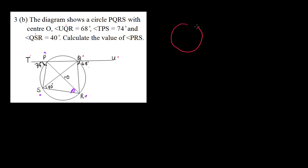Then you approach it like that. The first thing we need to do here is to check the theorem. If we have a circle with a cyclic quadrilateral inside, and a point is extended outside, there's a theorem in circle geometry that says the exterior angle of a cyclic quadrilateral is equal to the opposite interior angle.